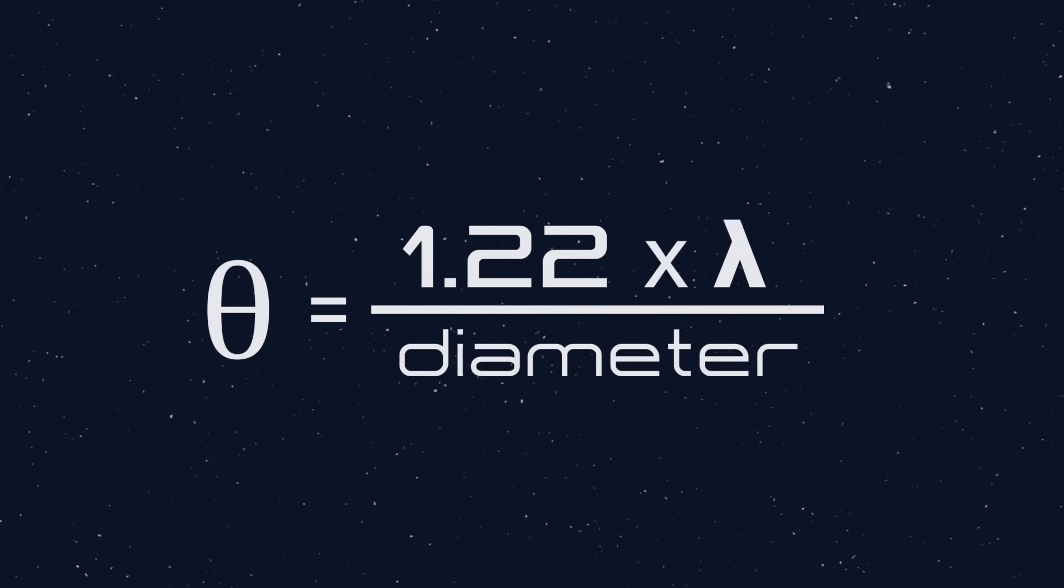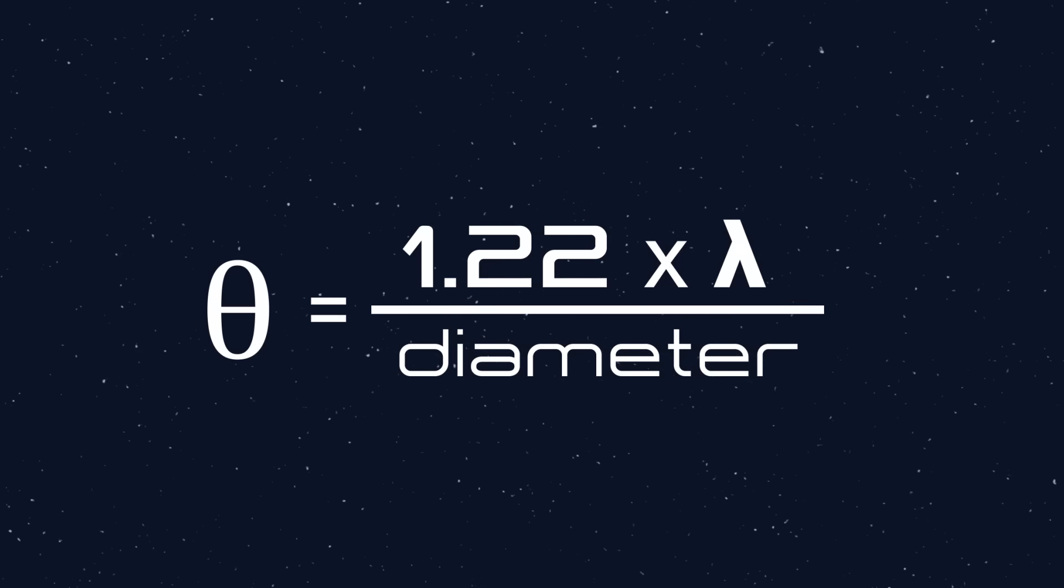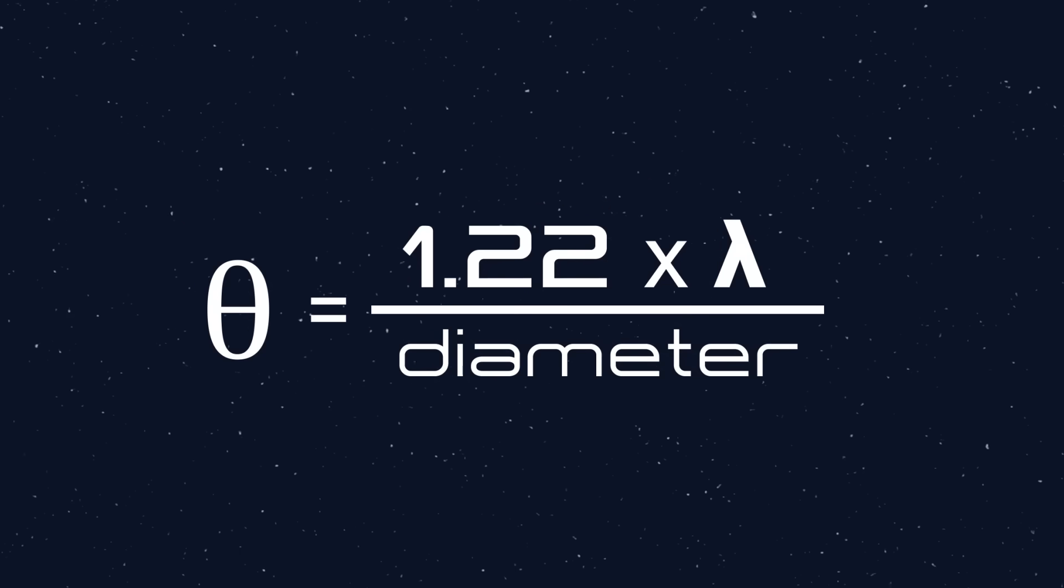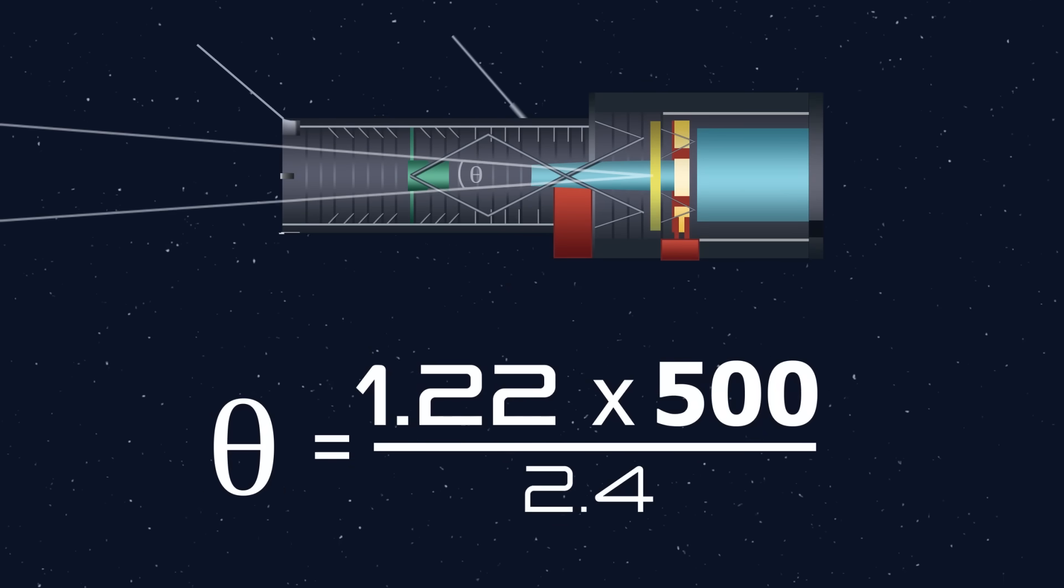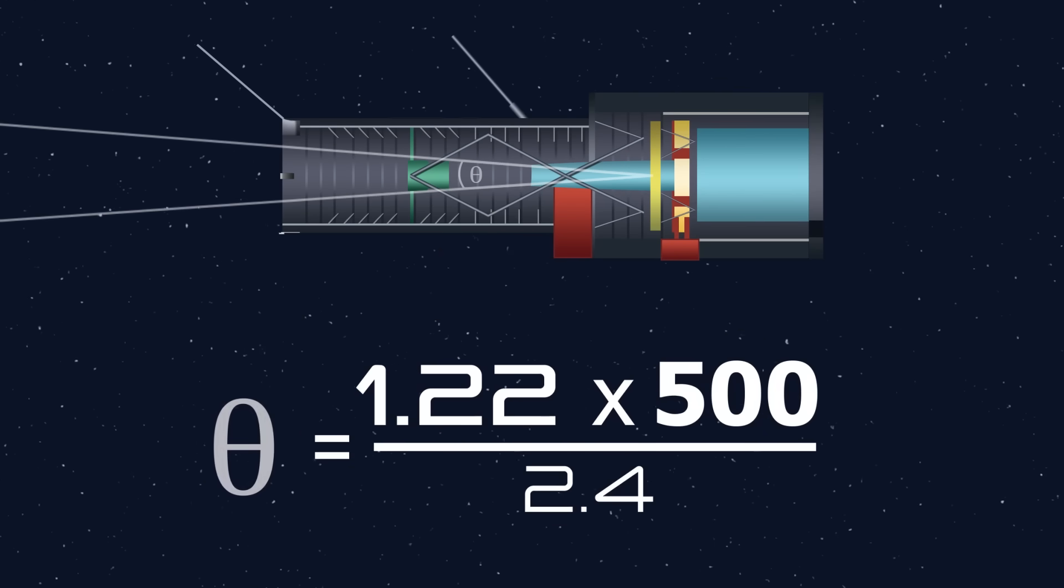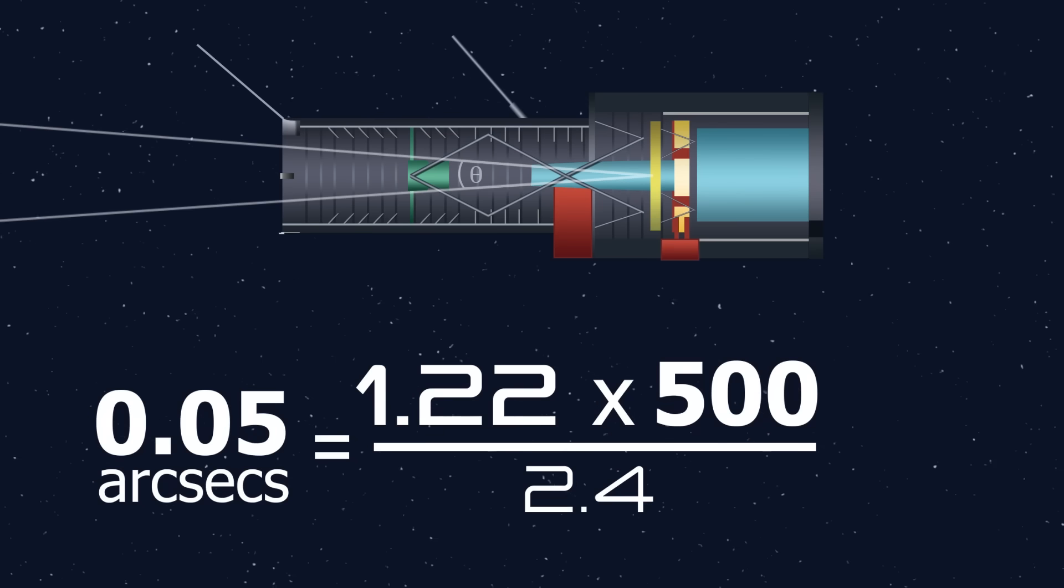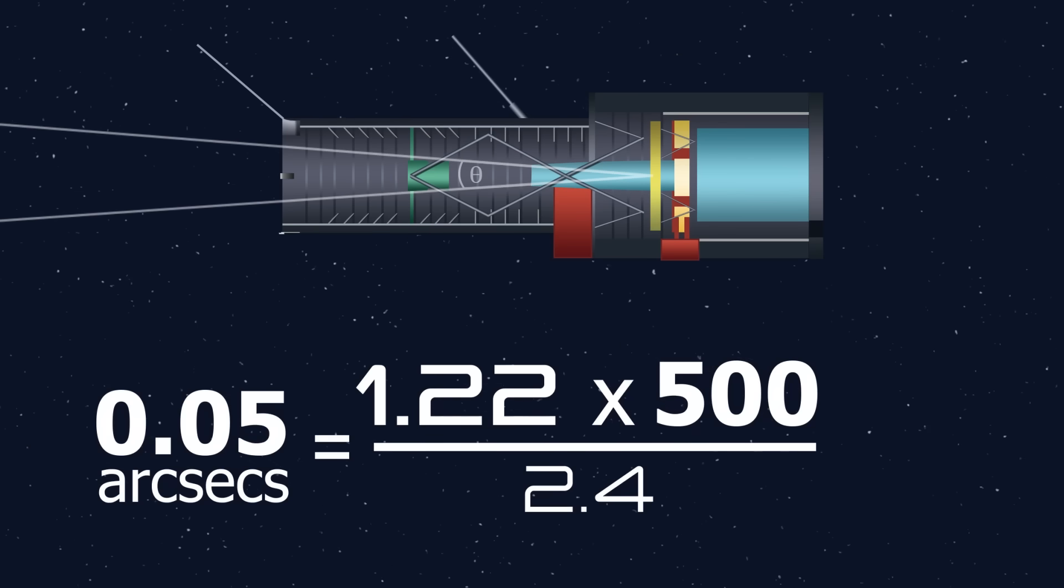This is given by 1.22 multiplied by the wavelength of the light over the diameter of the mirror. When observing visible light of about 500 nm, Hubble has an angular resolution of about 0.05 arcseconds. This beats the human eye's resolution by a factor of 1,000.